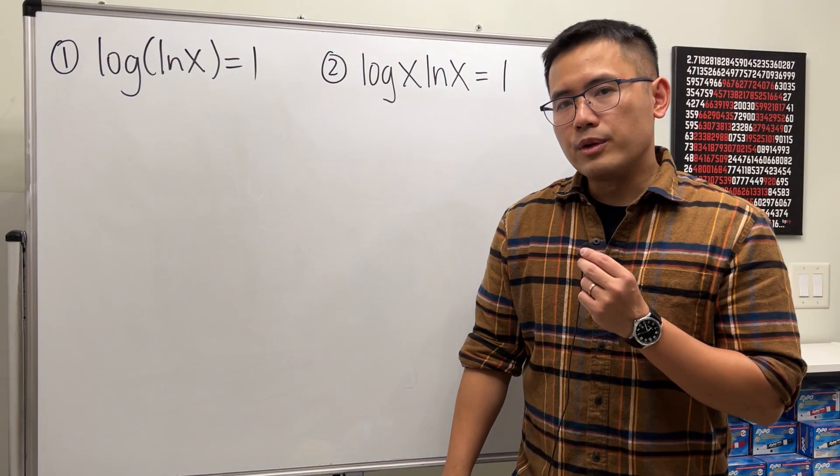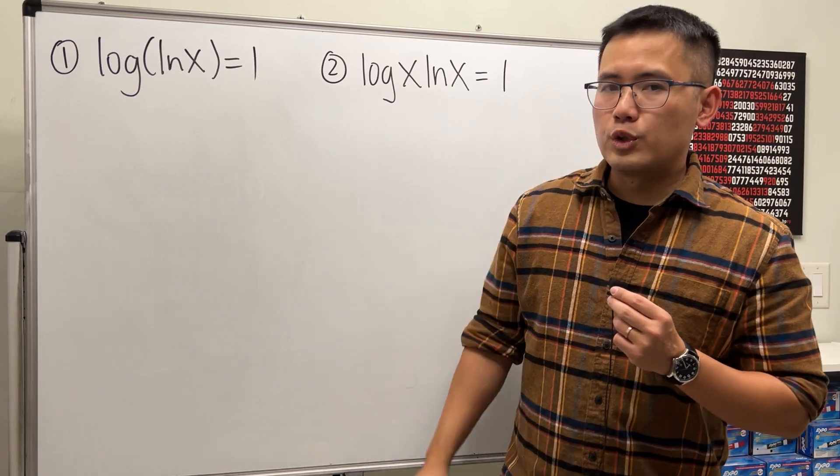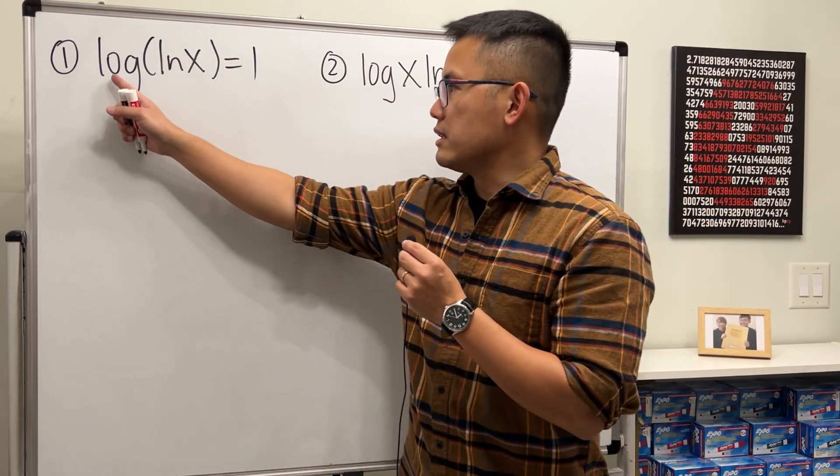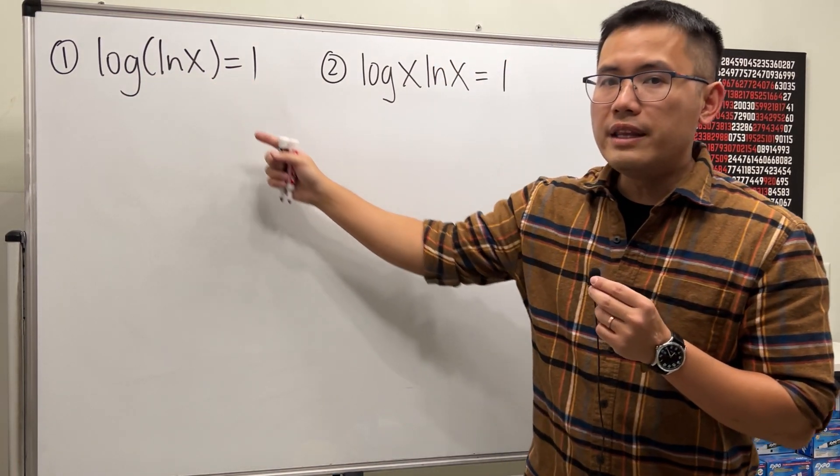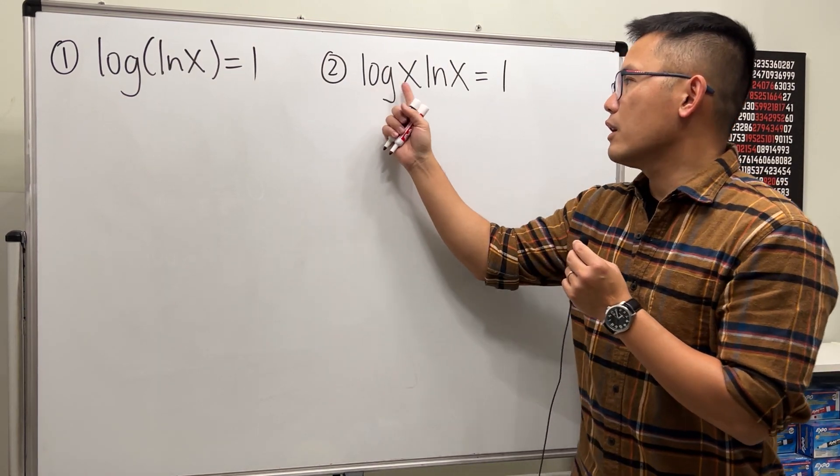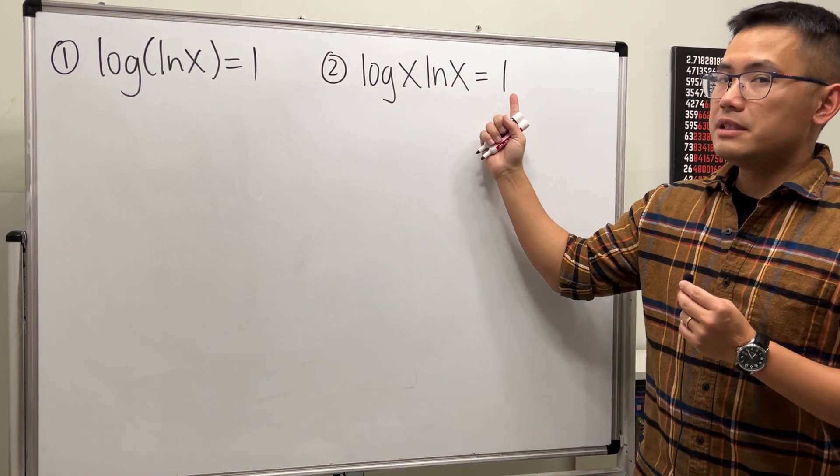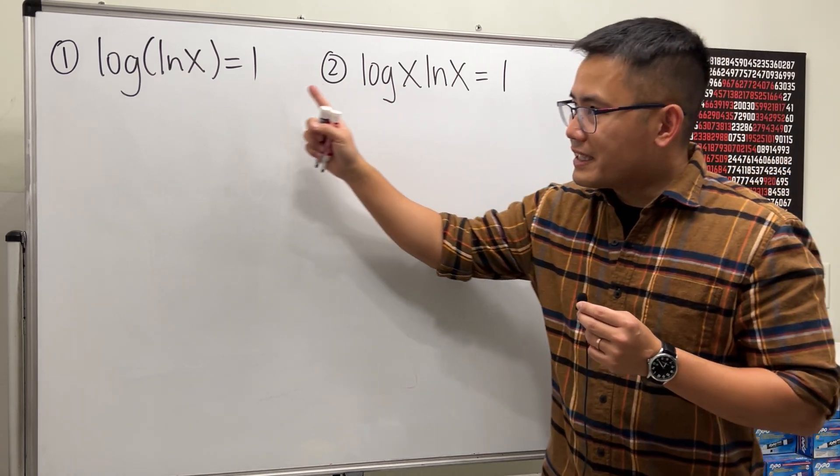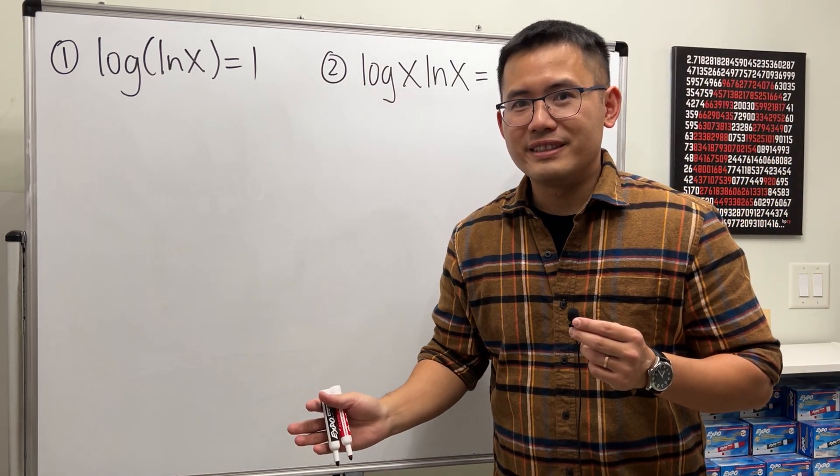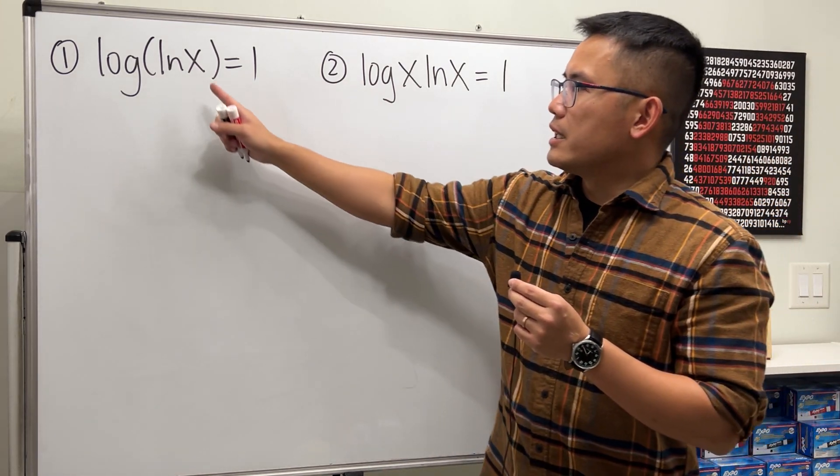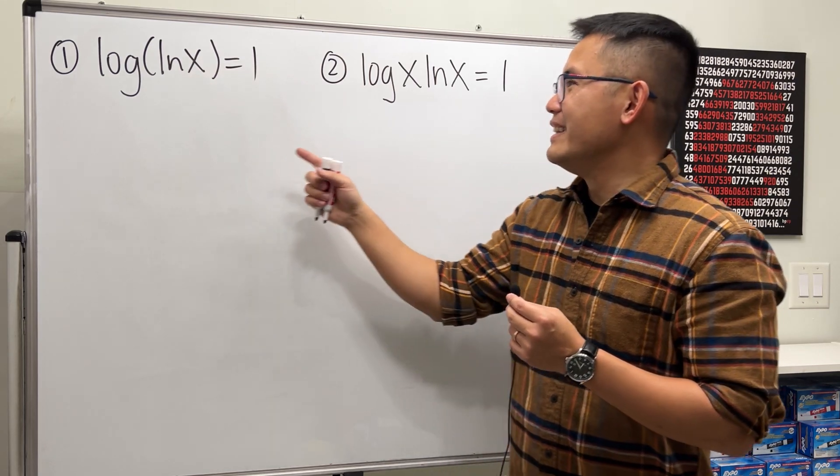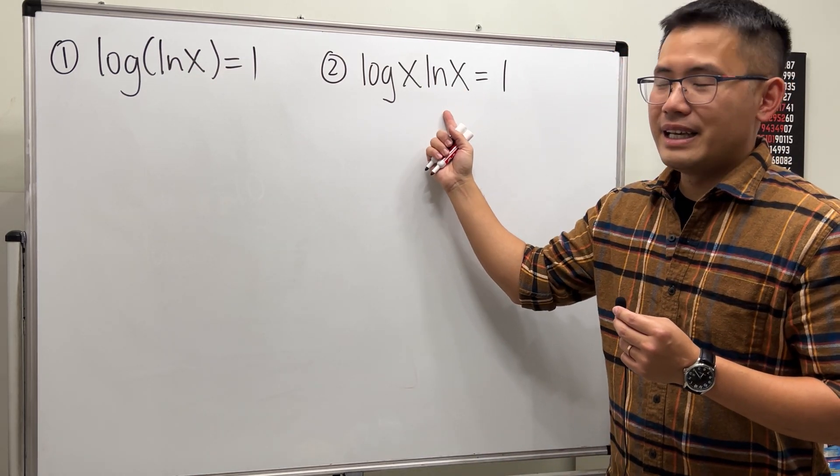In this algebra tutorial, I'm going to show you how to solve these two logarithmic equations. The first one is log of ln of x equals 1, and for the second one we have log of x times ln of x equals 1. Notice that they look similar but they're different. The difference is that here we only have one x and then here we have two x's.